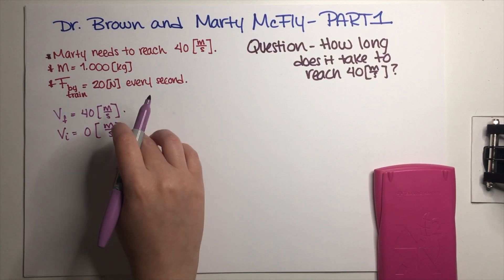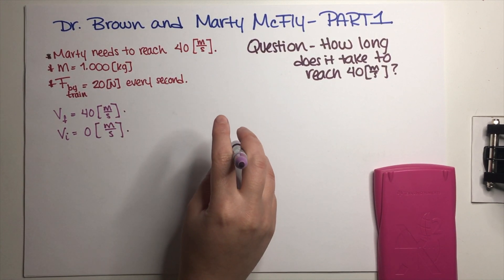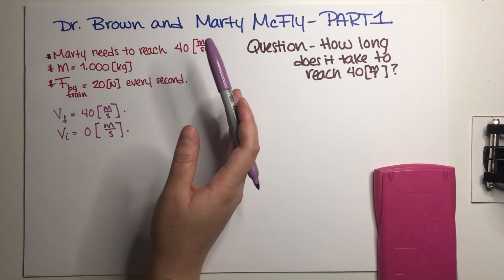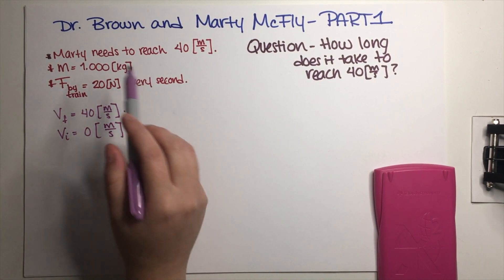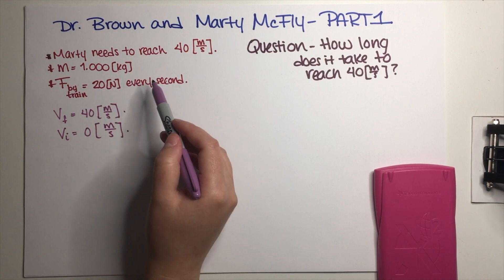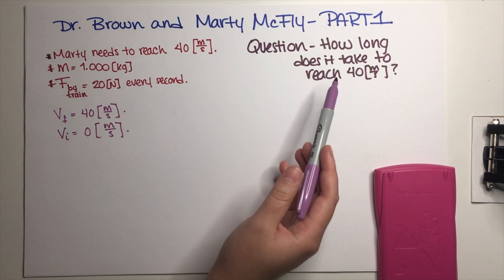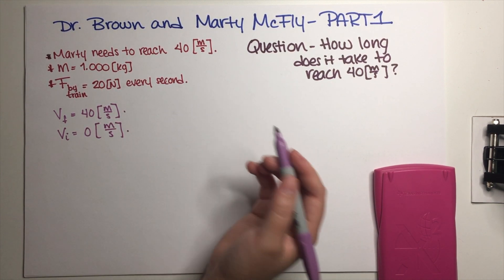Obviously the car has some mass and that is going to be useful. The train that's going to be pushing the car is able to exert 20 newtons every second. So the question is how long should it take to reach 40 meters per second.